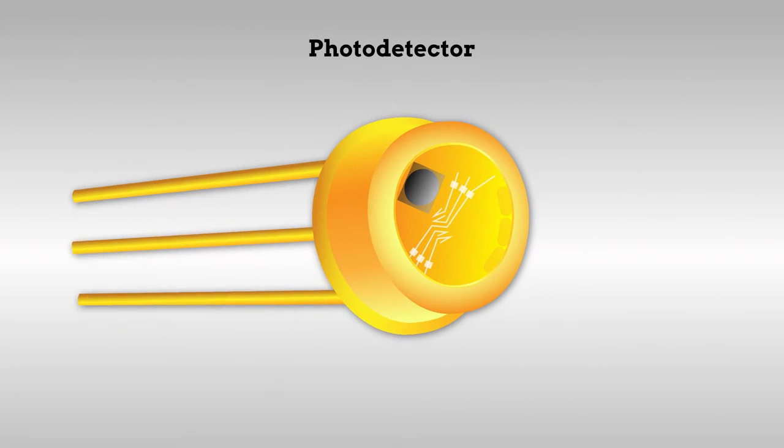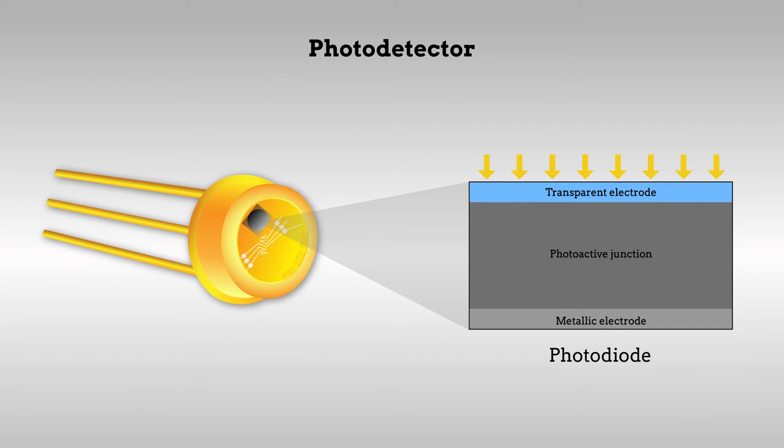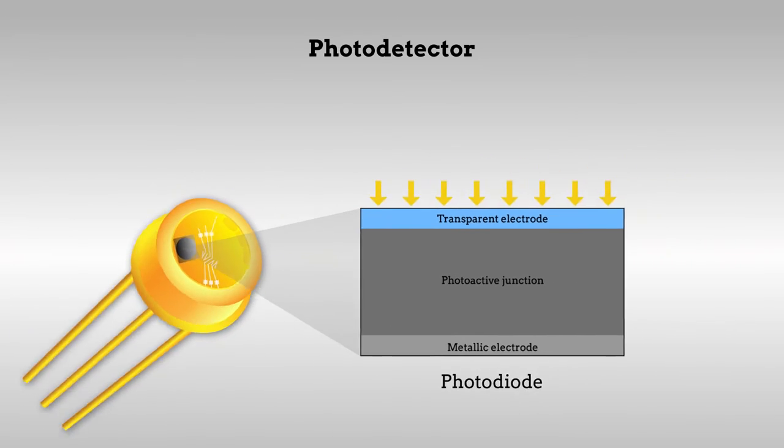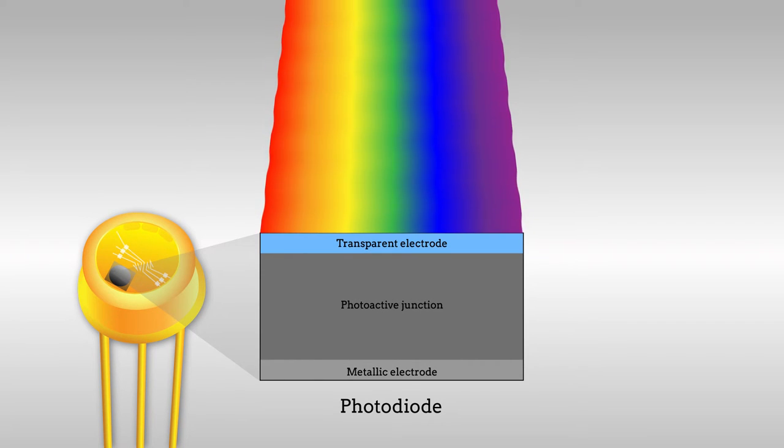A photodetector is composed of an array of devices called photodiodes, which absorb light to produce electric current. Because many photodetector materials are sensitive to light of a wide range of wavelengths or colors, photodiodes designed to detect a specific color often use absorptive filters to achieve the desired color response.